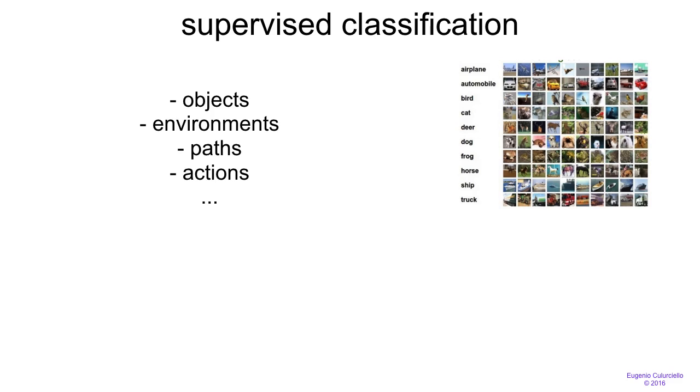We saw an example of supervised classification for image categorization. In supervised classification we could be categorizing different things. It doesn't have to be an object category.